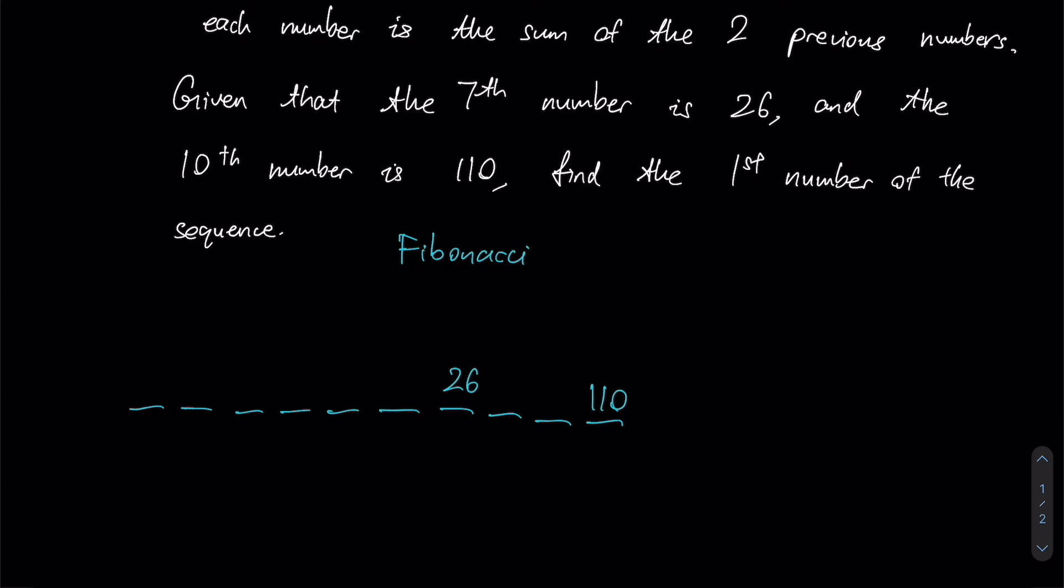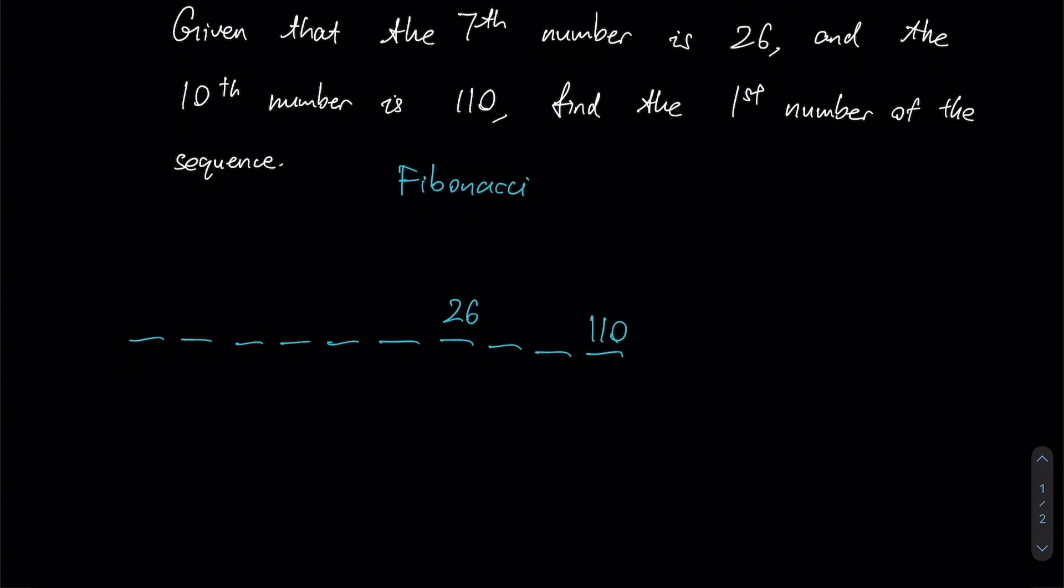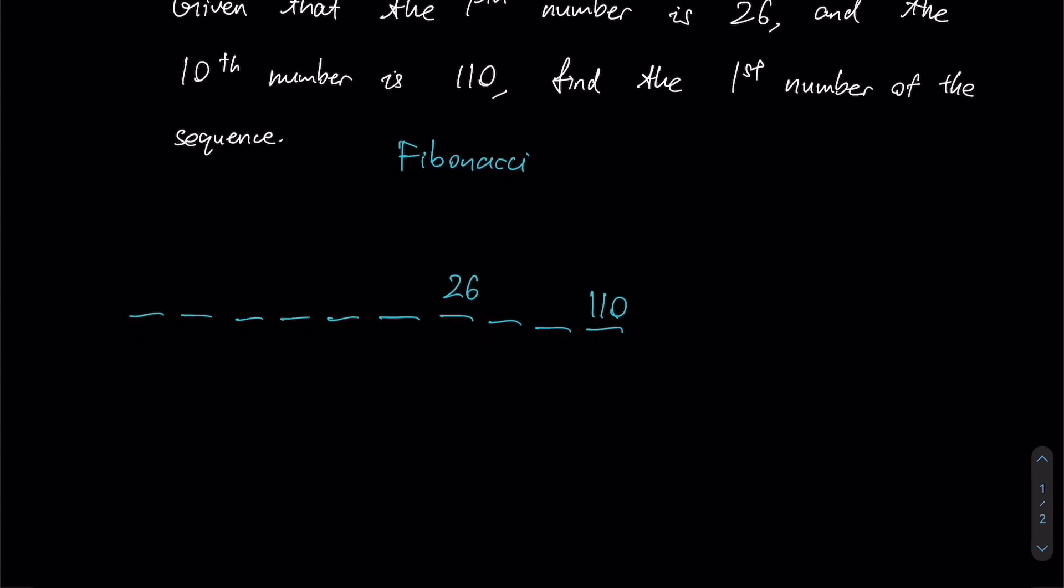Notice that this one's a little bit more challenging because we don't exactly know what these two blanks are supposed to be, what values they must take. Hence, the way to do this is to let the eighth number here be, say, a.